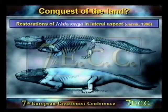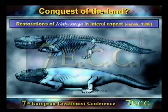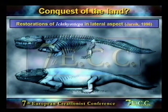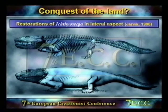Here are two reconstructions of Ichthyostega — a skeletal reconstruction and a life reconstruction. This animal is about one metre long, has a broad flat head somewhat crocodile-like in appearance, a barrel-shaped body, stocky legs, large pelvic and pectoral girdles, and a rib cage made up of broad overlapping ribs.